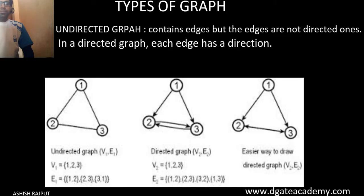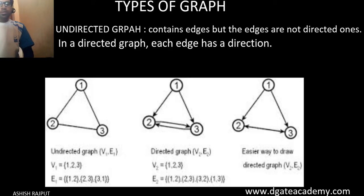Looking at the example, the first graph is an undirected graph because there is no direction on any edge. The second is a directed graph. In the second graph, there is an edge from vertex 2 to vertex 3 and an edge from vertex 3 to vertex 2, but these are not parallel edges because in parallel edges the direction of the edges must be the same.